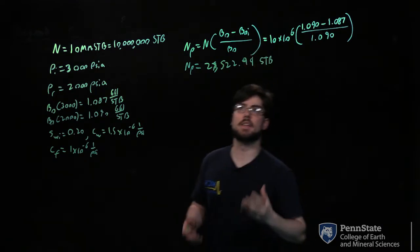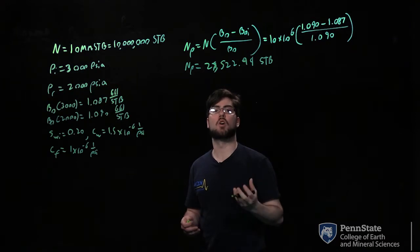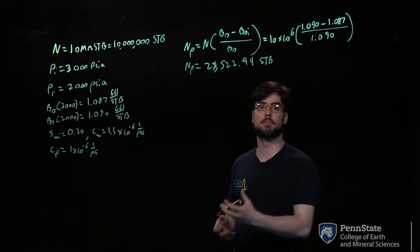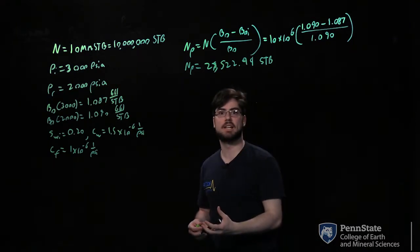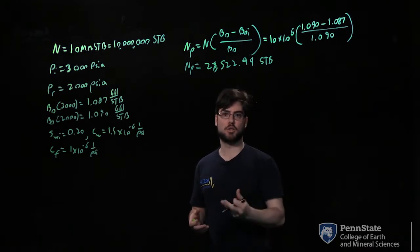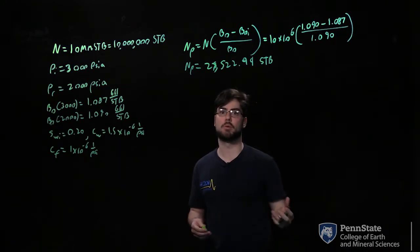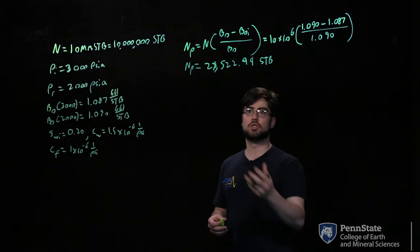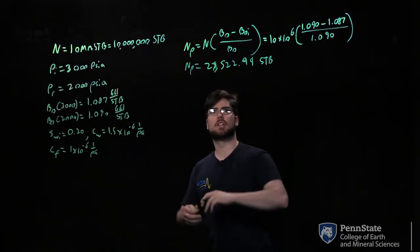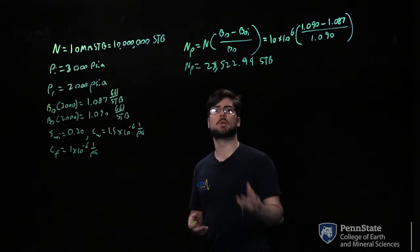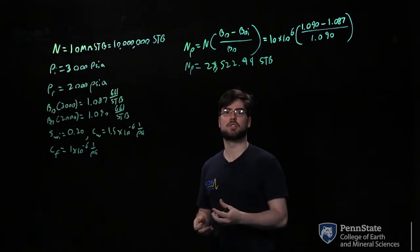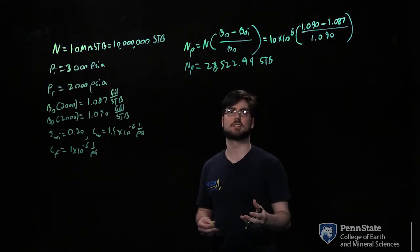This result is due to fluid expansion, which is the drive mechanism as discussed in lesson 4. This is one of the drive mechanisms for oil production. The difference in your Bo values — your formation volume factors — is the reason you're getting production in this case.